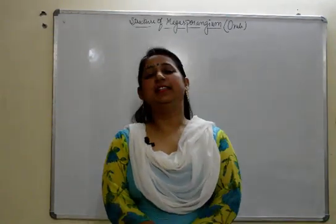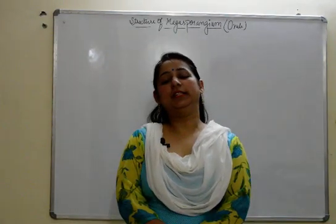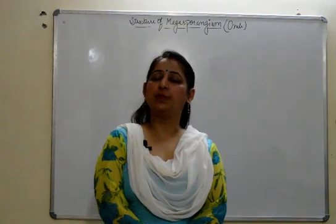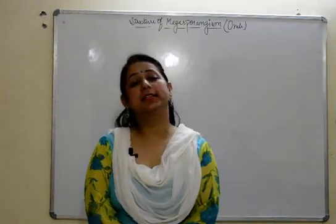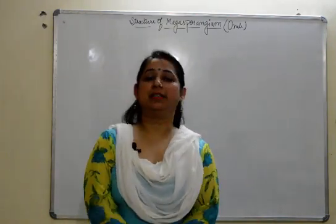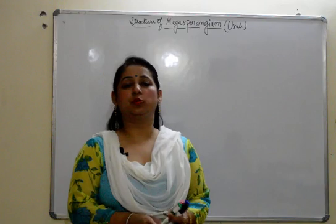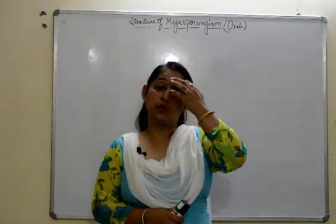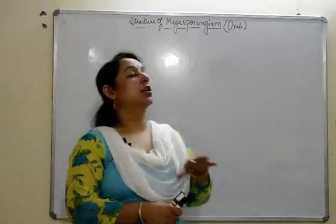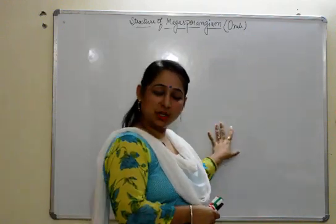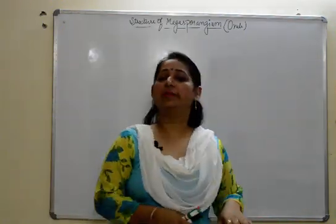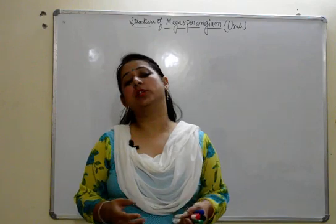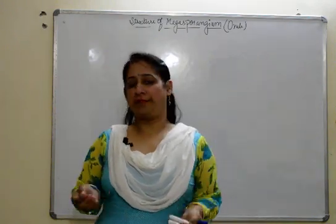Hello everyone. This video is in continuation to the chapter reproduction in flowering plants, where we were discussing about the male part of the flower. We have discussed about microspore, its structure, and also microsporogenesis. Now here we are going to start with the megasporangium, structure of megasporangium and ovule, or you can say we are going to start with the female part of the flower.